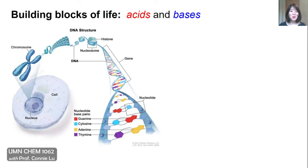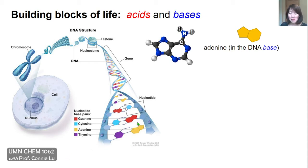One reason we might want to study acids and bases is because they are found in the building blocks of life. In this image, we have a cell, and as we zoom into the nucleus and then the chromosome, we see the beautiful double helix. The double helix is held together by hydrogen bonds between ring structures called the DNA bases. For example, this yellow ring structure is adenine, composed of carbon, nitrogen, and protons — one of the DNA bases.